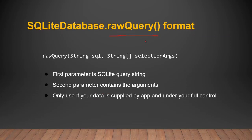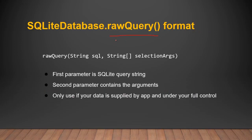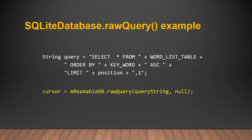Let's learn the format of raw query and also the query method. The first parameter is the SQL operations string. The next one is the selection args — these are the WHERE conditions. The first parameter of rawQuery is an SQLite query string, and the second parameter contains the argument for the conditions you set. Only use rawQuery if your data is supplied by the app and is under your full control.